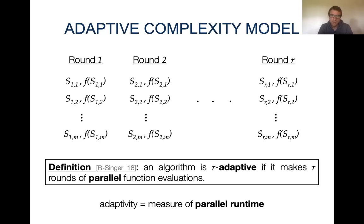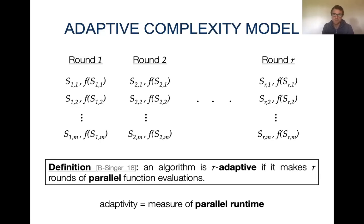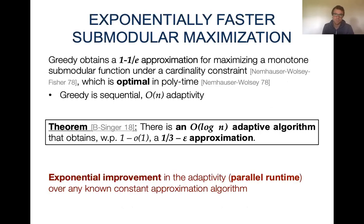The adaptivity of algorithms has been very well studied in two closely related fields: submodular maximization and convex optimization. I will now discuss the adaptivity results in these two fields, starting with submodular maximization. Unlike submodular minimization, submodular maximization cannot be solved exactly.